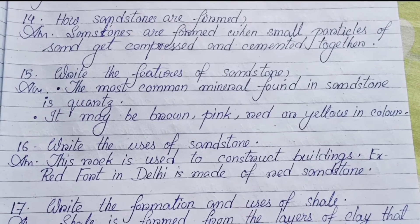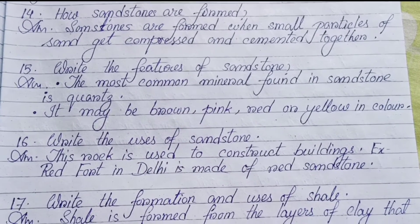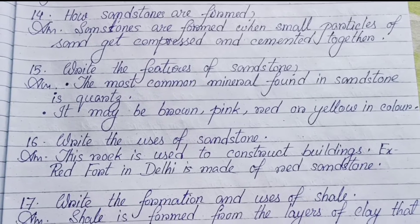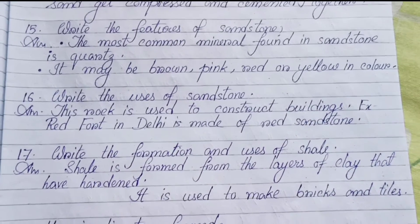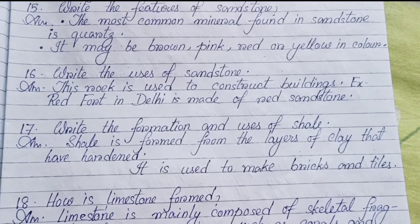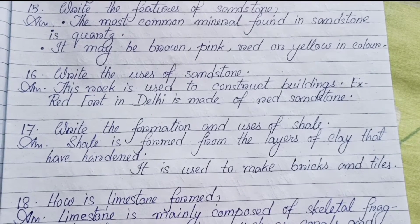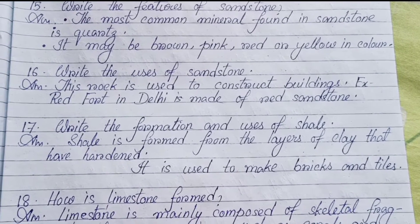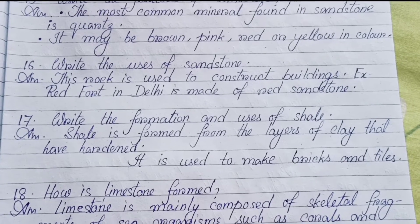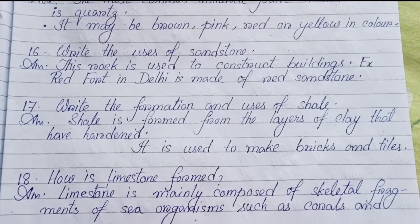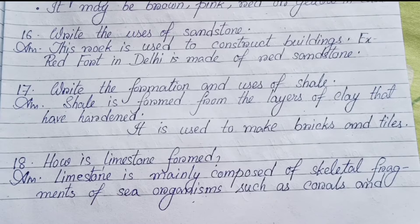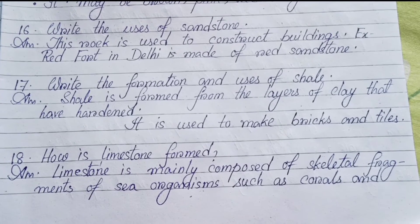Number fourteen: How are sandstones formed? Sandstones are formed when small particles of sand get compressed and cemented together. Number fifteen: Features of sandstone — The most common mineral found in sandstone is quartz. It may be brown, pink, red, or yellow in color. Number sixteen: Uses of sandstone — This rock is used to construct buildings. For example, the Red Fort in Delhi is made of red sandstone.